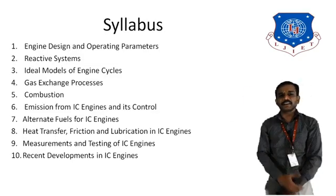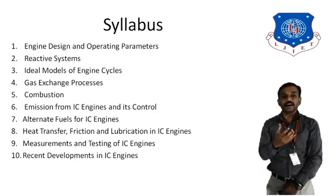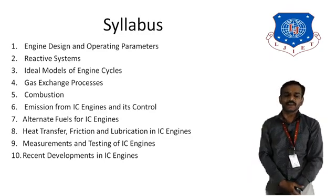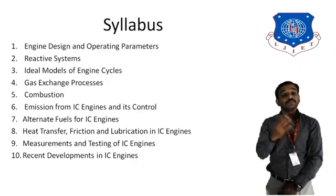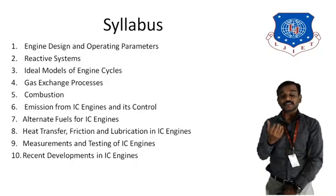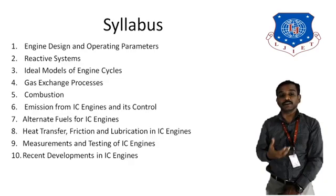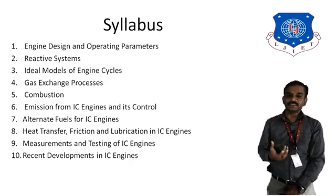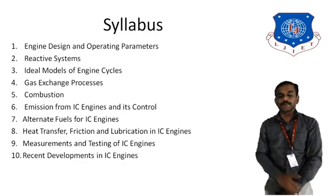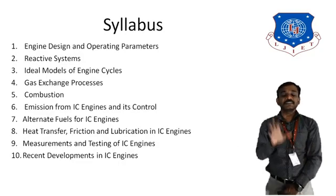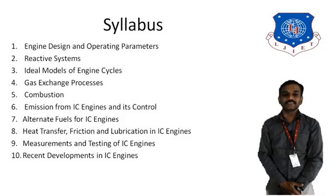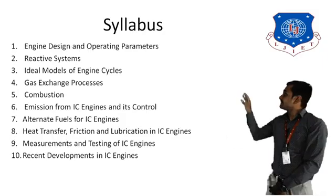Chapter six is about emissions from IC engines and their control. There are many unwanted gases generated during the combustion process that are emitted into the atmosphere, which definitely affects the overall ecological system. Therefore it is inevitable to use devices that reduce these emissions as much as possible. We are going to see what different emissions occur from the IC engine, how they can be controlled or reduced before being emitted into the atmosphere, and also various Indian standards that control IC engine emissions.